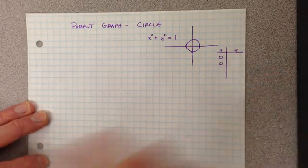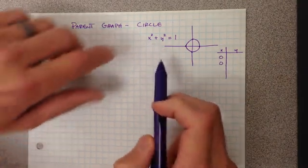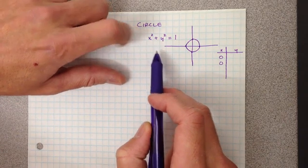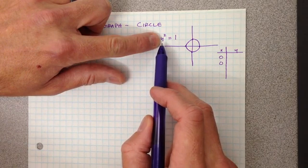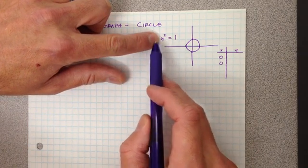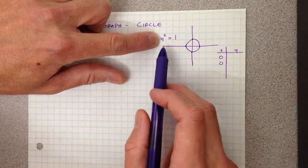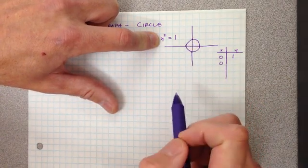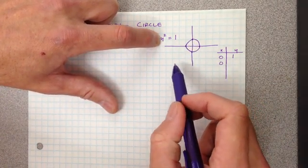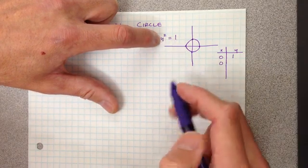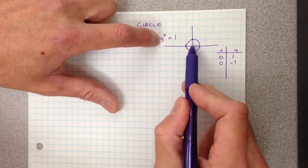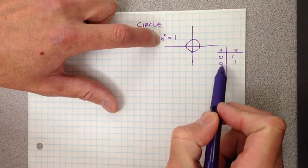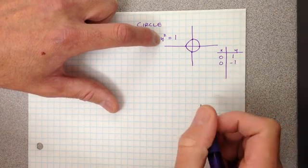When I put in an x-value of zero, zero squared is zero, so that leaves me with y² = 1. We can get one when we square either positive one or negative one. So when we have an x-value of zero, we could be at y = negative one or y = one. This singular input really has two different outputs, making it not a function.